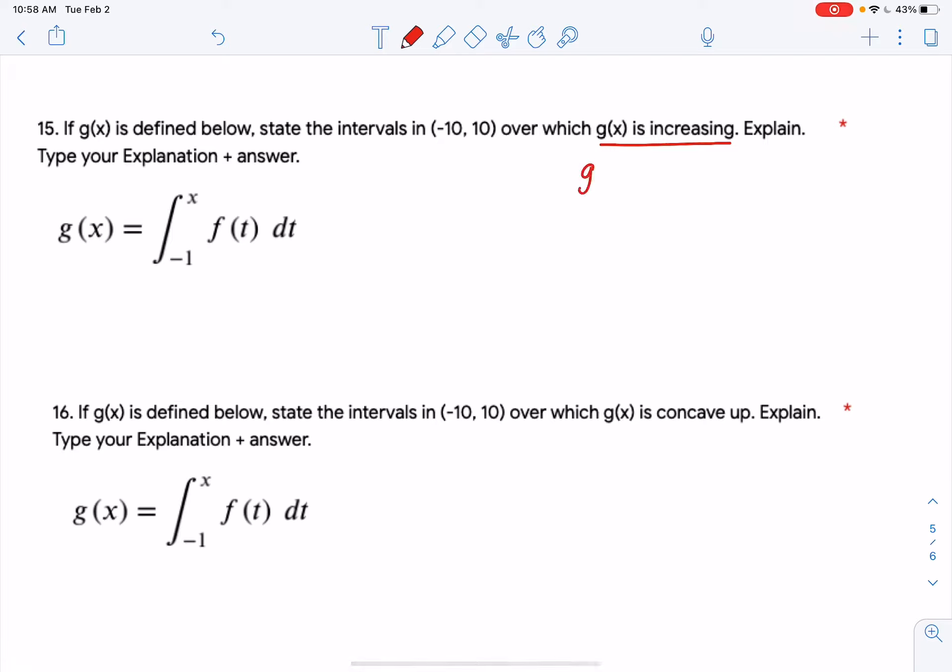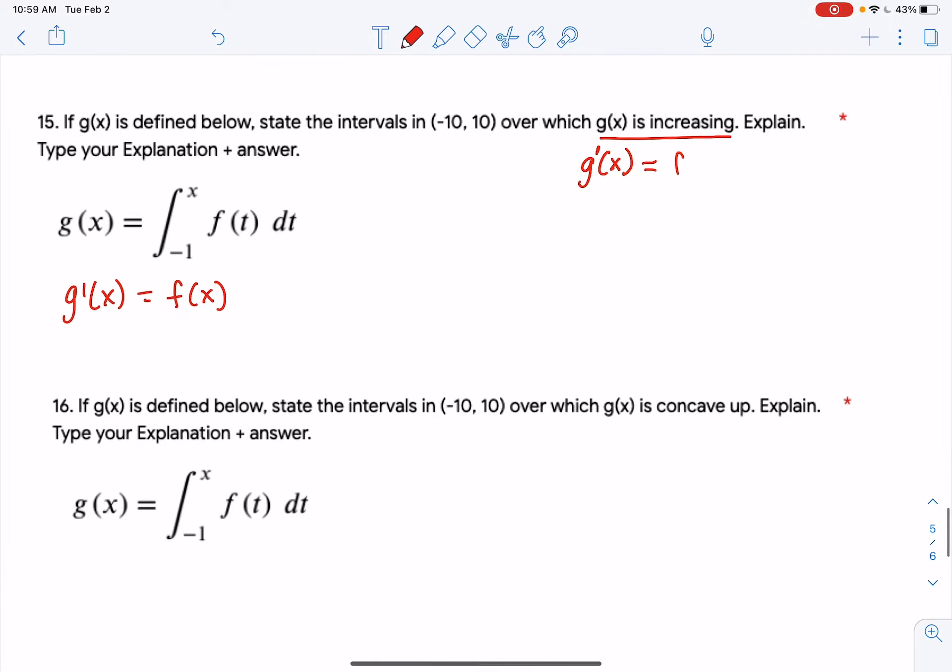We know that g is increasing where g prime, which by the way, using FTC2, we know that g prime is just f of x. So g prime, which is f, should be greater than 0. That's the definition. If something is increasing, its slope is greater than 0.